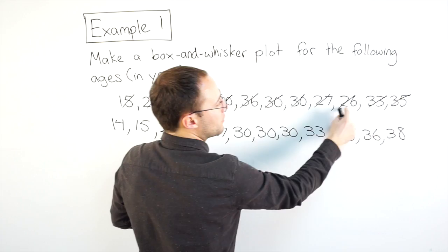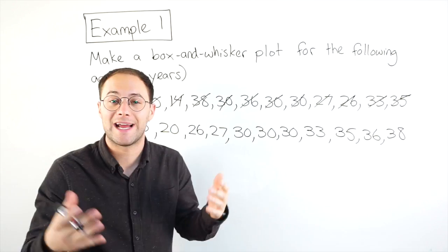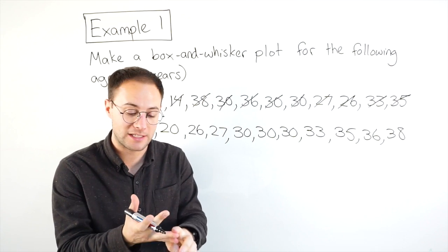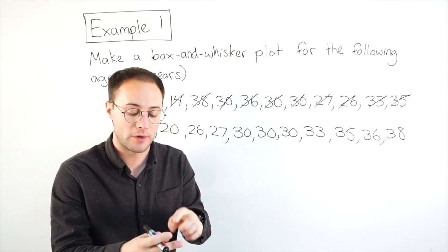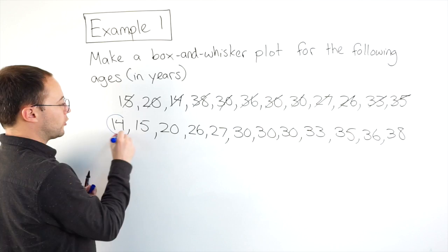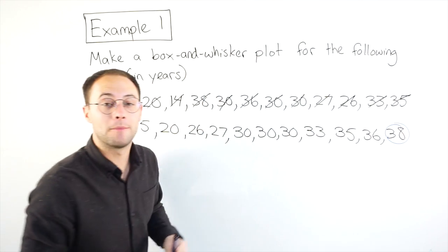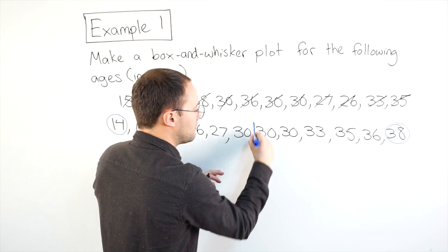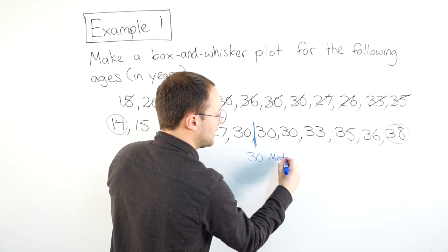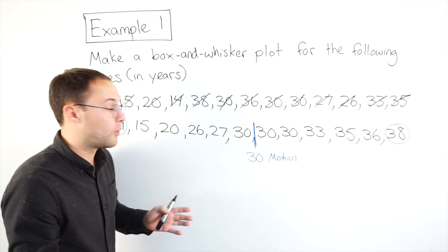So, let's see. 1, 2, 11, 12. 1, 2, 3, 9, 10, 11, 12. Good. So, I'm happy. Now, I need to know those five numbers. I need to know my least value, my greatest value, Q1, Q3, and my median. So, first, my least 14. That's easy. My greatest 38. Now, let's find the median. So, right in the middle there, 30 is my median.